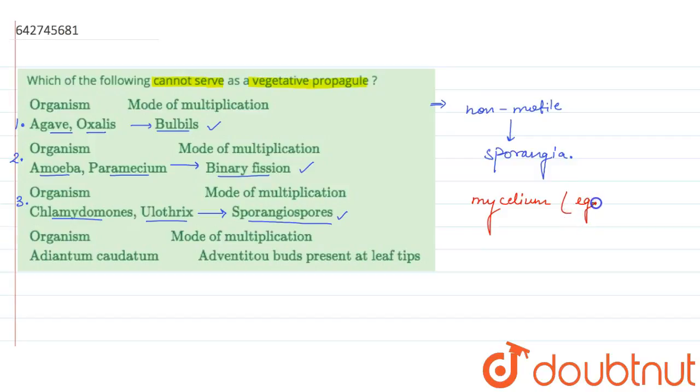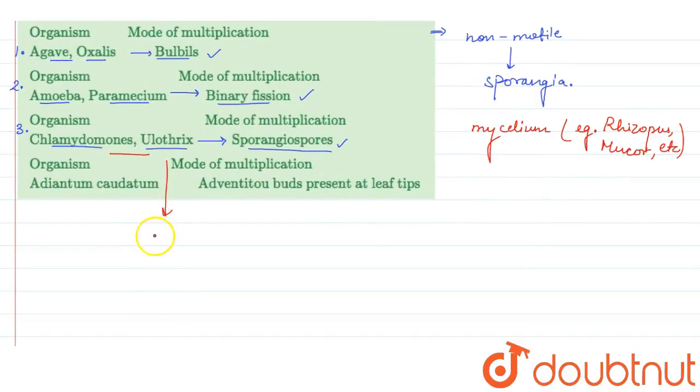Examples for this include Rhizopus and Mucor. In Chlamydomonas and Ulothrix, the spores that are formed are zoospores.